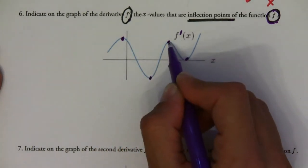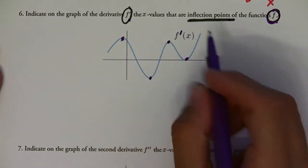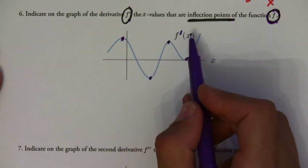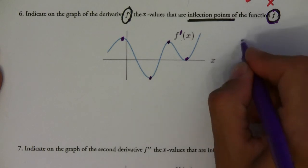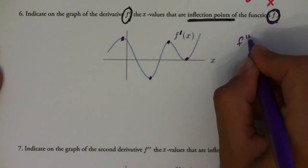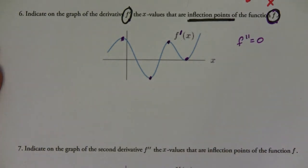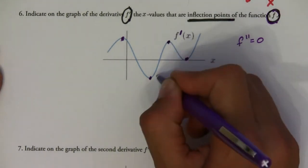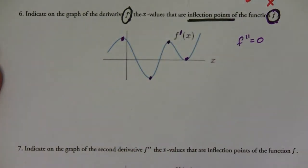At each of these spots, the first derivative has a maximum or minimum, so its derivative — which is the second derivative — is going to equal zero at each one of these spots.